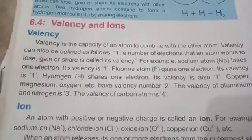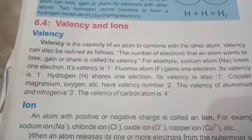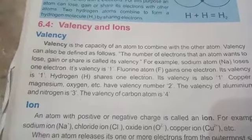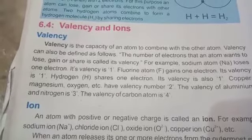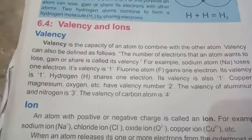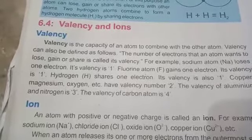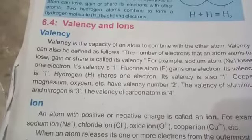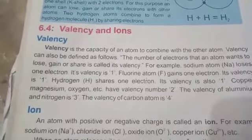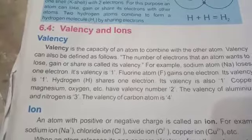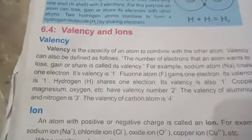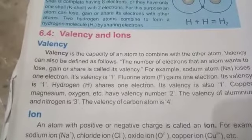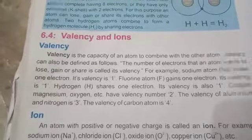The number of electrons that an atom will share, lose, or gain is called its valency. For example, sodium loses one electron, so its valency is one. Fluorine gains one electron, so its valency is one. As we studied, the hydrogen atom shares one electron, so its valency is also one. So the number of electrons that any atom will share, lose, or gain is known as its valency.